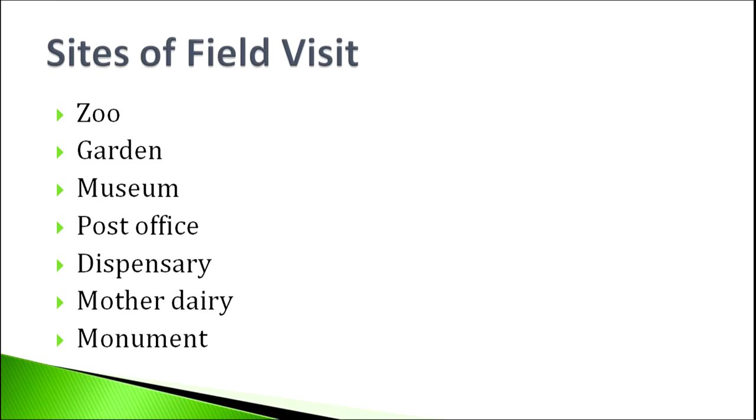Certain sites for field visit include a zoo, garden, museum, post office, dispensary, Mother Dairy, monument, or any other place that is close to your school and where taking students is not a hassle. For example, students of class 5 went to a pond which was next to the school — so the pond becomes the site of a field visit.